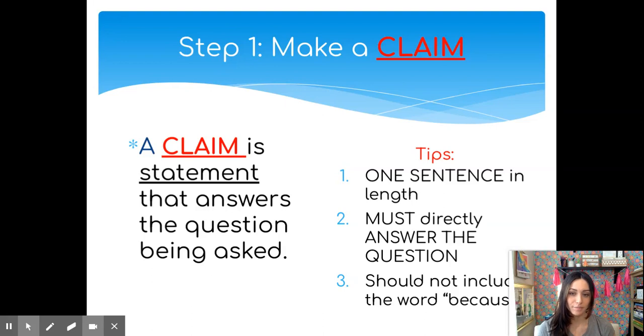Now let's look at the first step to any good scientific argument. The first step in a CER argument is our C. This is our claim. A claim is simply a statement that answers the question that is being asked. Some tips to keep in mind when writing your scientific argument claim. Your claim should only be one sentence in length. It should directly answer the question that's being asked, and it should not include the word because. Make sure when you're writing a claim that you make a statement that answers the question, and you put a period at the end. Anything that comes after that because doesn't belong in the claim section, but likely in the evidence or the reasoning.